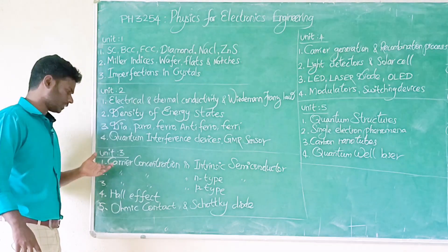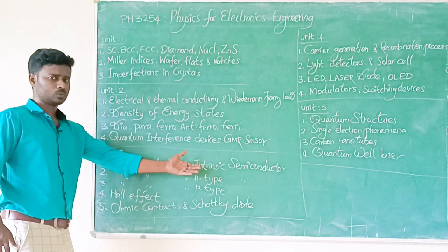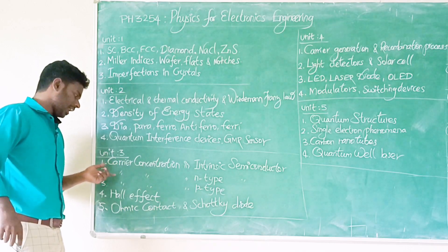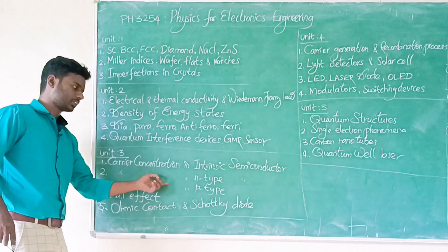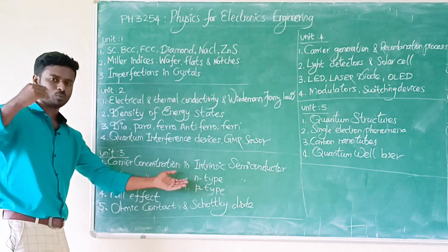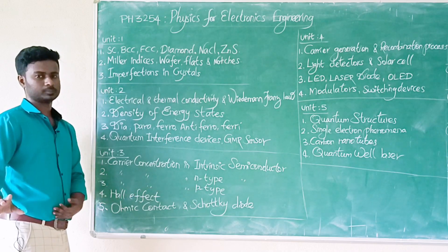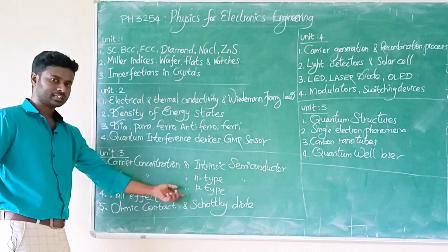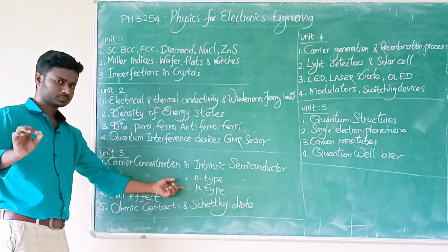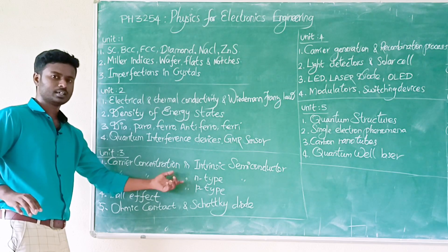Unit 3 is Carrier Concentration. First question: carrier concentration in intrinsic semiconductors. Second: carrier concentration in N-type semiconductors. Third: P-type semiconductors. The second question also covers effective masses M_e and M_h.